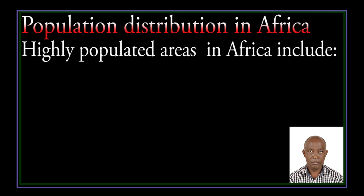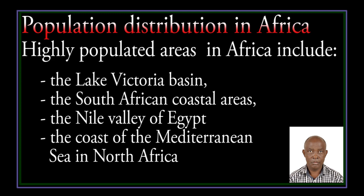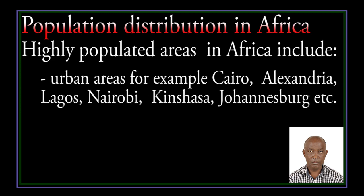Highly populated areas in Africa include West Africa along the coastal regions, south of the Sahel, the European Highlands, Highlands of Rwanda and Burundi, the Lake Victoria Basin, the South Africa coastal areas, the narrow valley of Egypt, the coast of the Mediterranean in North Africa, and urban areas such as Cairo, Alexandria, Lagos, Nairobi, Kinshasa, Johannesburg, and so on.